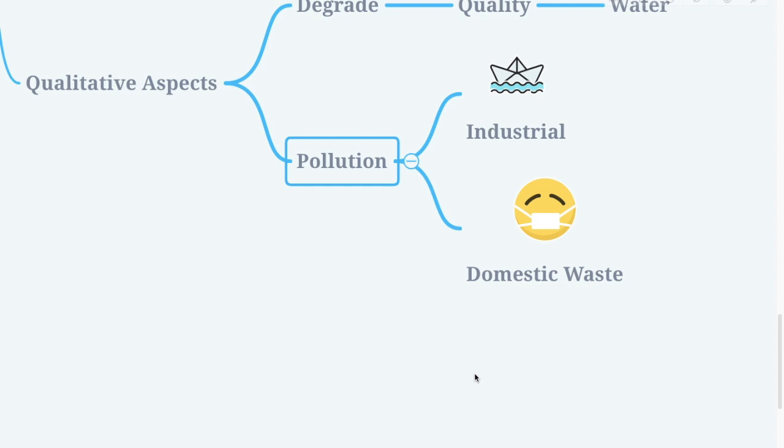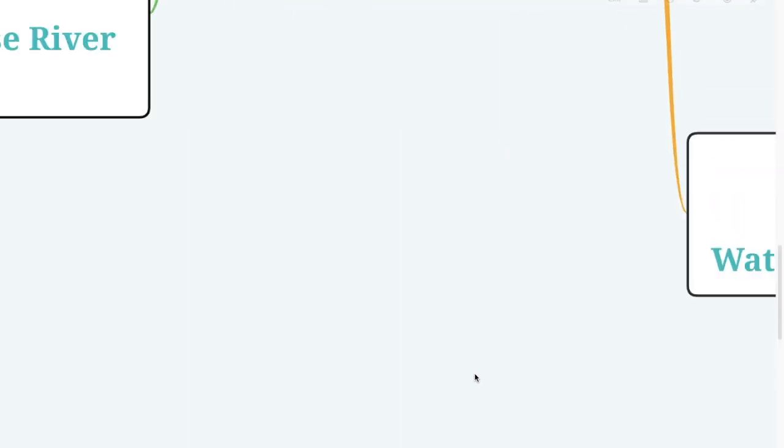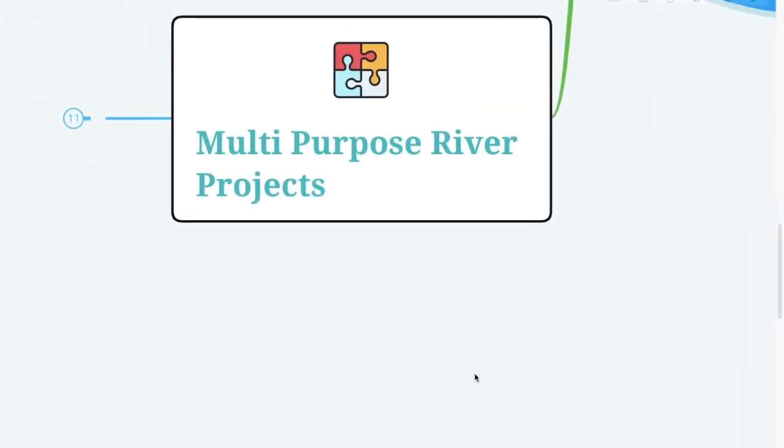Now let's look at multi-purpose river projects. During the time of Chandragupta Maurya, dams, lakes, and many irrigation systems were extensively built. Evidence of sophisticated irrigation works have been found in Kalinga in Orissa, Nagarjunakonda in Andhra Pradesh, Benur in Karnataka, and Kolapur in Maharashtra.